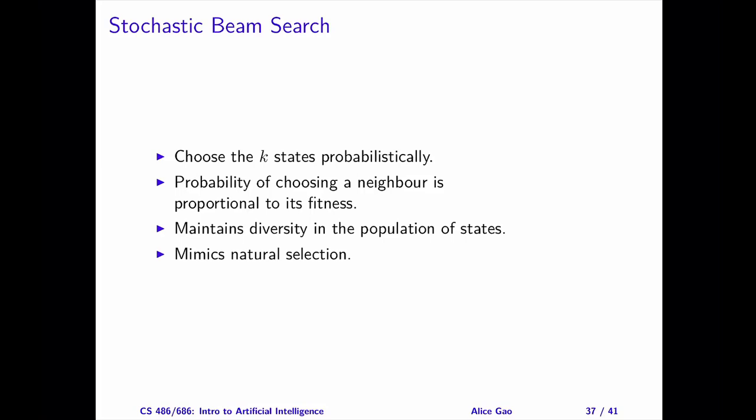Stochastic beam search is quite similar to beam search — it remembers a population of k states. The main difference is how it updates the k states. While both algorithms look at all the neighbors of the k states, beam search chooses the next k states deterministically. In contrast, stochastic beam search chooses the next k states probabilistically. The probability of choosing each state is inversely proportional to the cost of the state — the lower the cost, the higher the probability. A crucial difference is that beam search chooses only the best states, whereas stochastic beam search may choose every state with a positive probability.